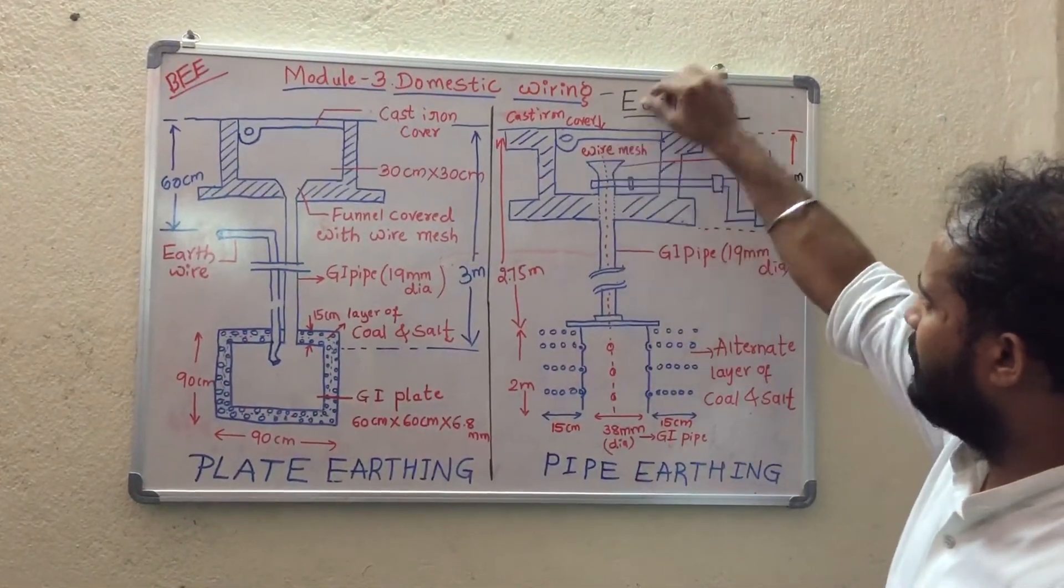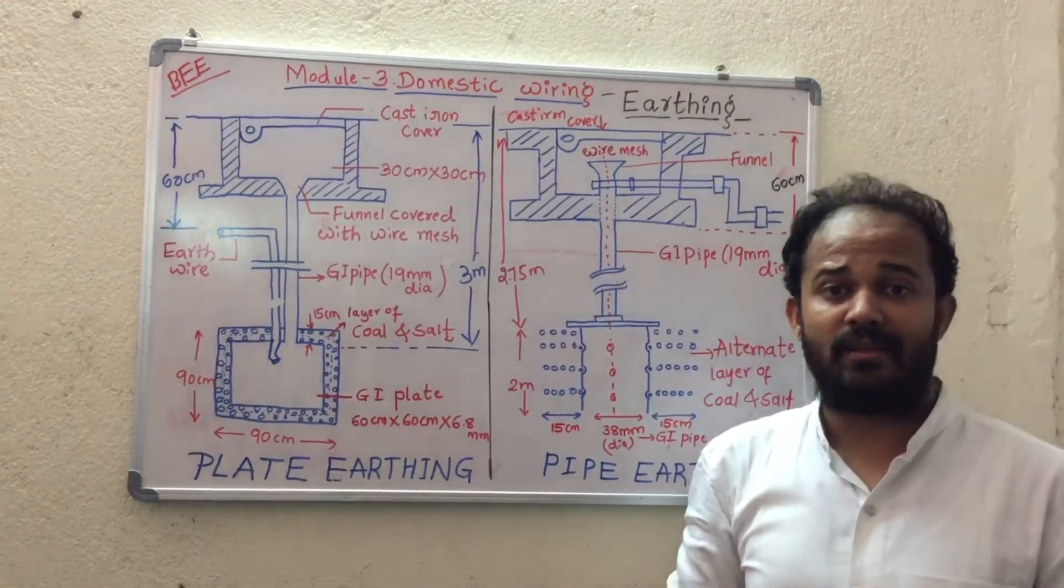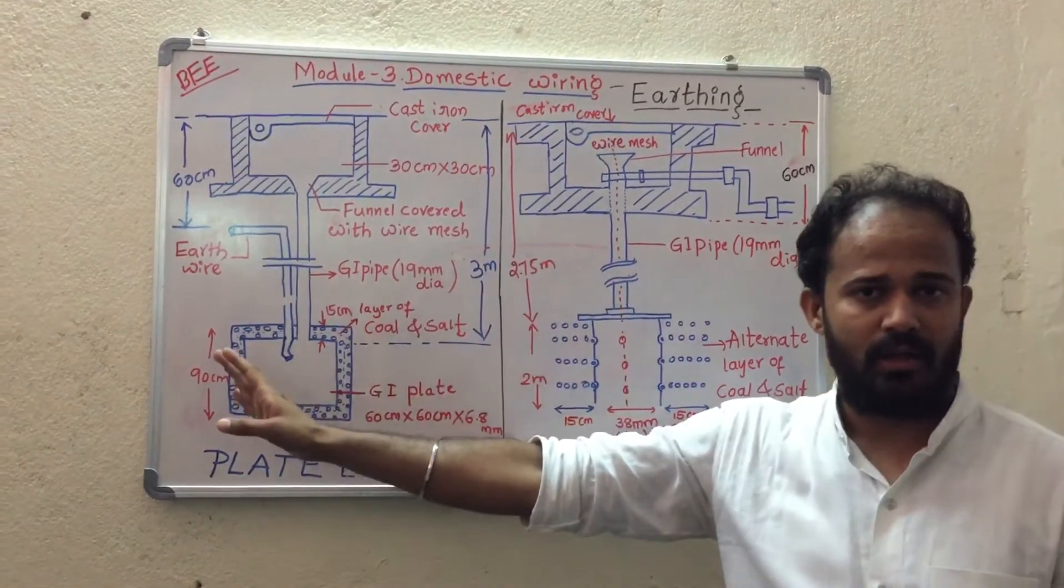In plate earthing, it was not possible to check the continuity test manually without digging the earth. Whereas here, by just pulling the cable from this particular pipe, we can check the continuity. That is the most important advantage of pipe earthing compared to plate earthing.